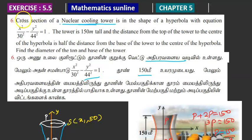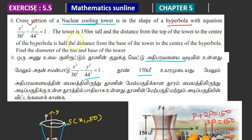The cross section of a nuclear cooling tower is the shape of a hyperbola with equation. It is a half distance from the base of the tower to the center of the hyperbola.